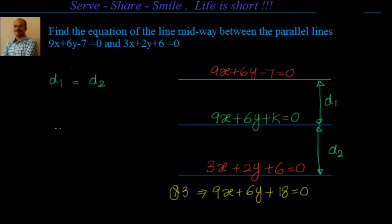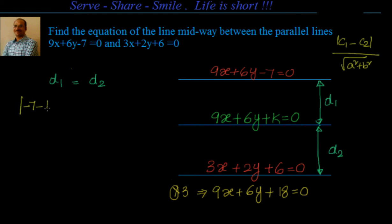So let's first find out what d1 is. The formula is mod of c1 minus c2, divided by square root of a squared plus b squared, where ax plus by plus c1 and c2 are the two parallel lines. Now we want to find out the distance between the first and the second, so the formula will be c1 minus c2.